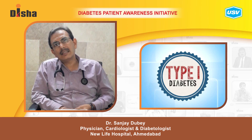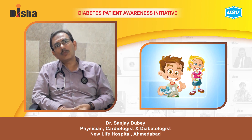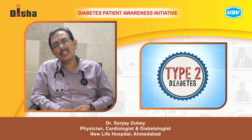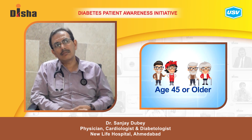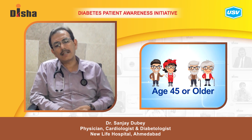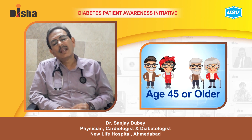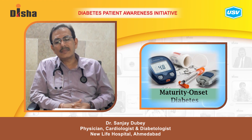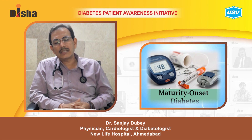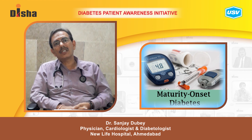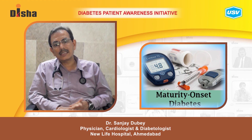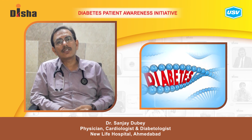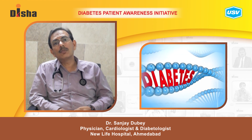Type 1 diabetes is mainly seen in the young age group of patients. Type 2 diabetes usually is seen after the age of 40, but it can begin after the age of 25 also. The third type of diabetes is maturity onset diabetes, which is an autoimmune disease seen mainly because of genetic mutations.